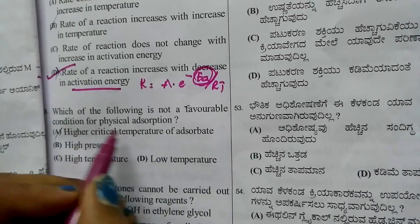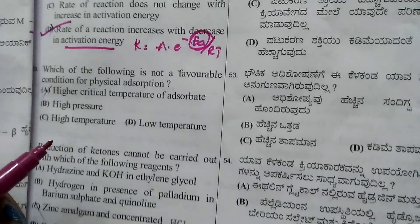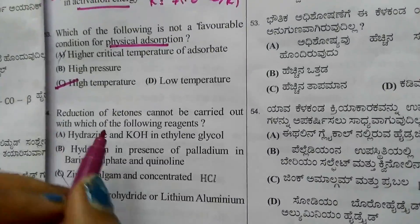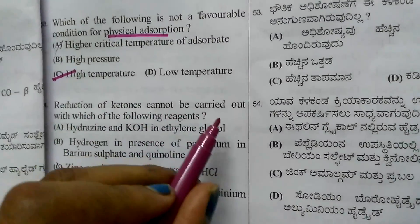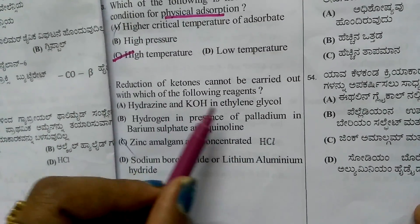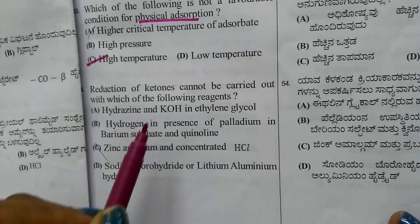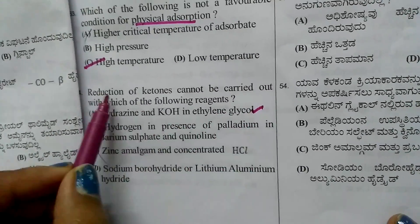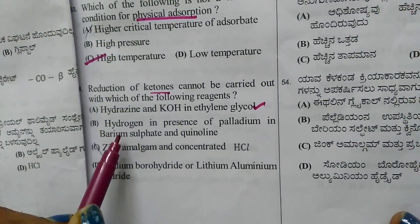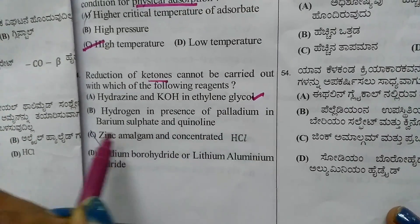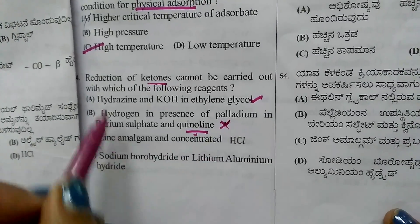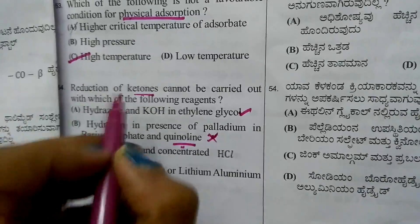Question 52: Not favorable for physical adsorption? Higher temperature means less physical adsorption, so it's not favorable. Question 53: Reduction of ketones cannot be carried out with which reagent? H2/Ni in ethylene glycol and H2/Pd-BaSO4/quinoline work for ketones, but H2 with Pd-BaSO4-quinoline is for alkenes, not ketones. Second option is wrong.